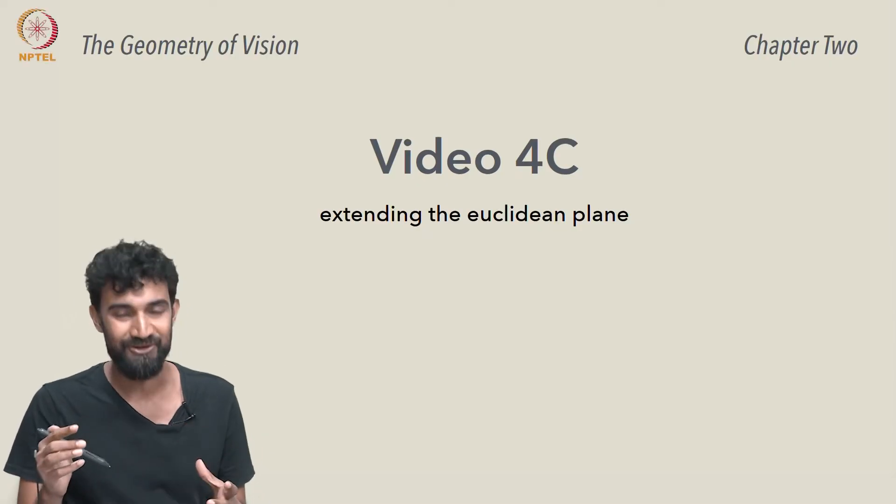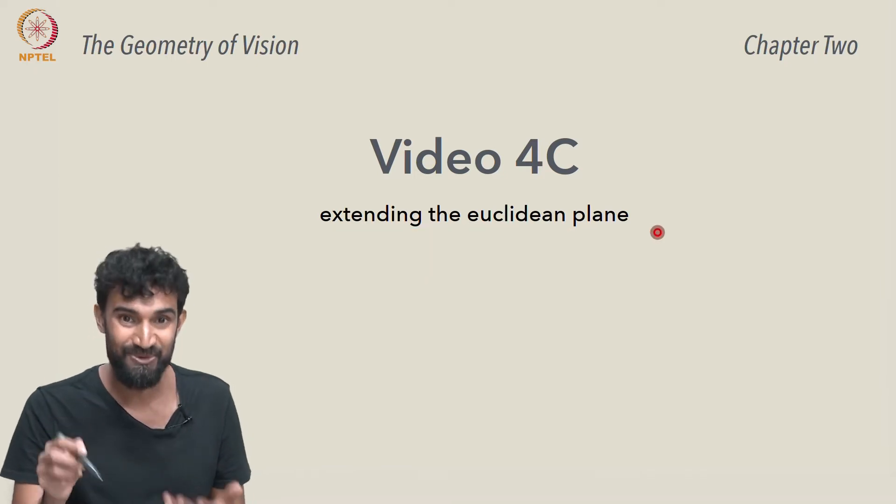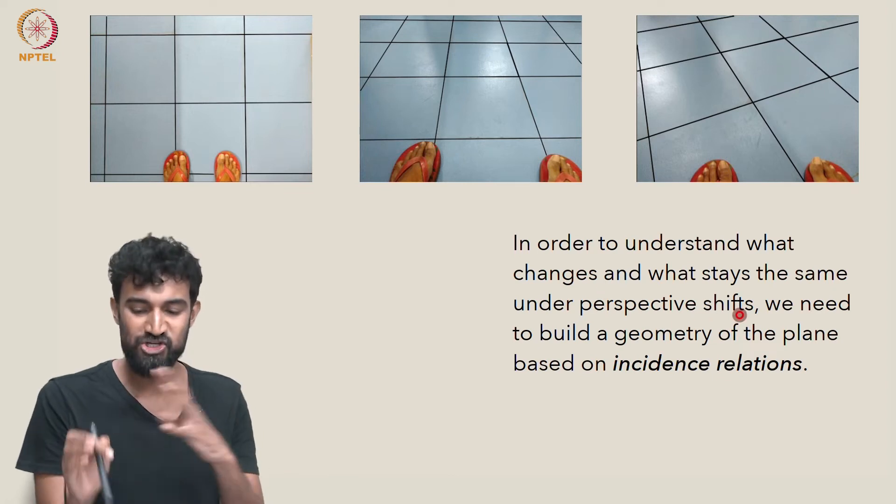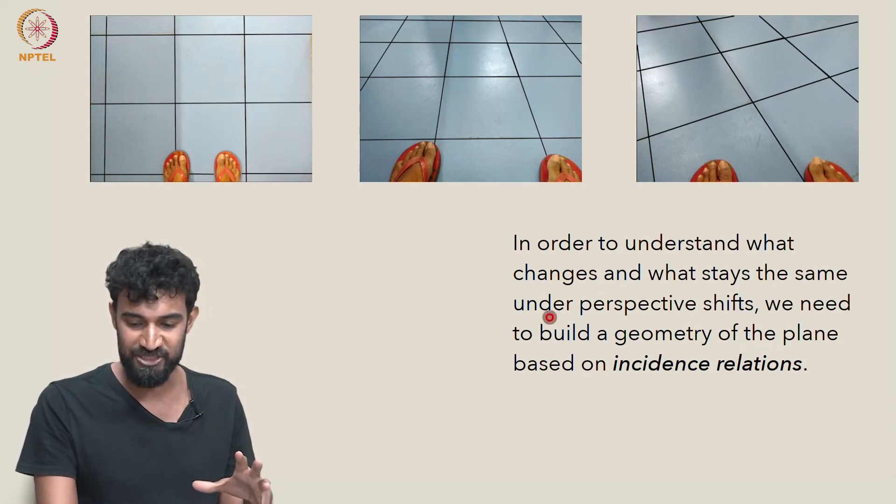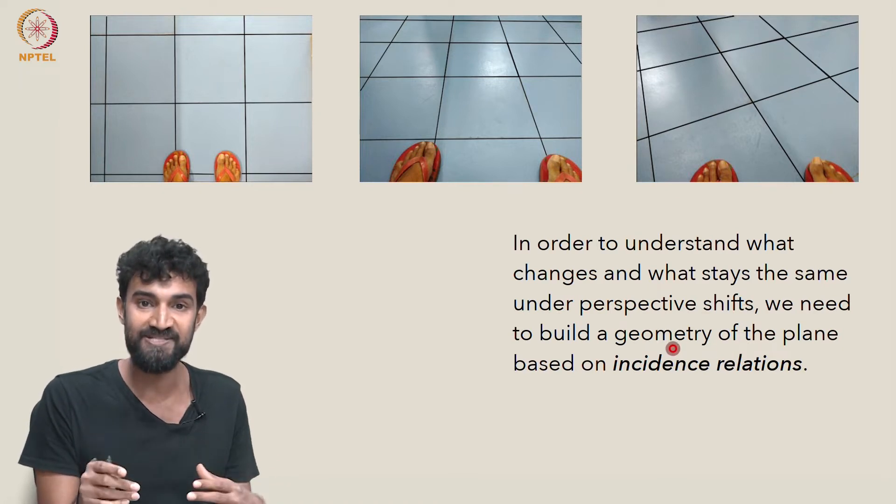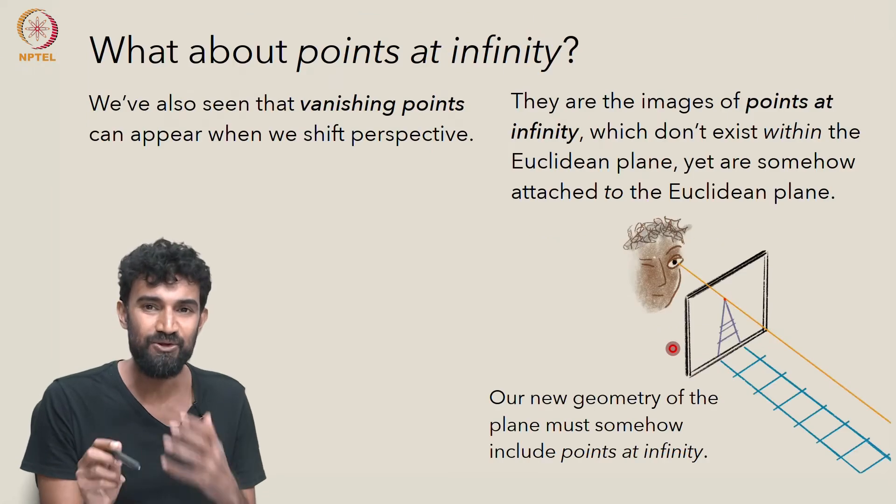So now let's put these ideas together and work on extending the Euclidean plane. This is where things get interesting. In order to understand what changes and what stays the same under a perspective shift, we want to build a geometry of the plane that's based entirely on incidence relations.